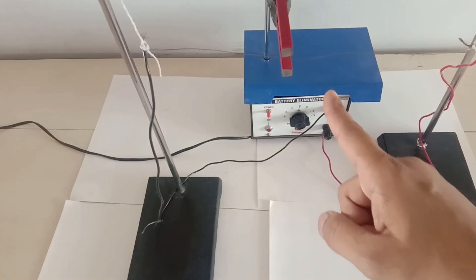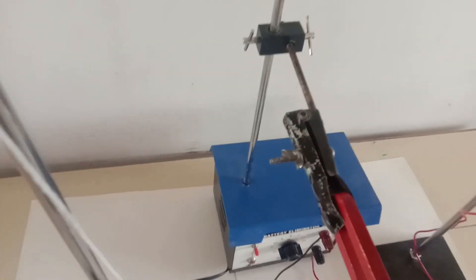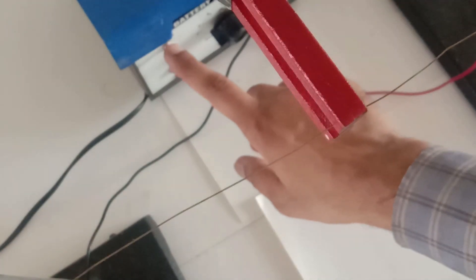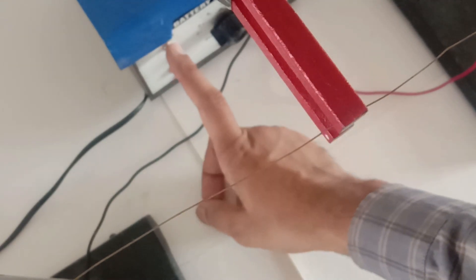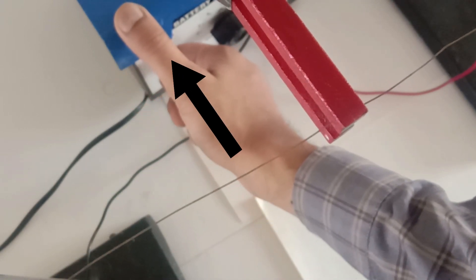As per Fleming's left hand rule, the force is expected in the inward direction this time. The wire is expected to move inwards. There we go. As we allow the current to flow through the circuit, the force is in this direction, inwards.